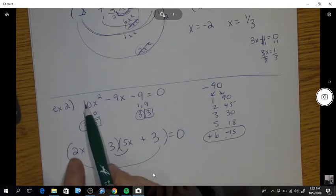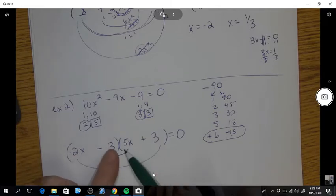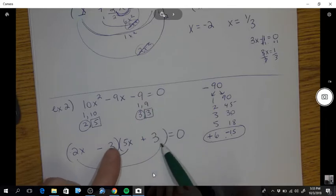and that needs to be negative to get me my negative 15. So do you see this? First, make 10x squared. Then my outside is in. Inside is combined for negative 9, right? So there's your 6 minus 15 and your last needs to be negative 9.